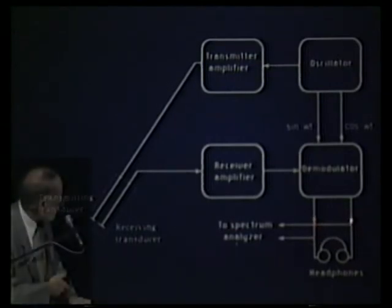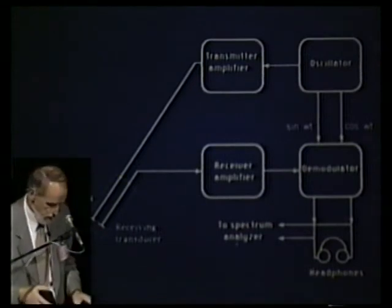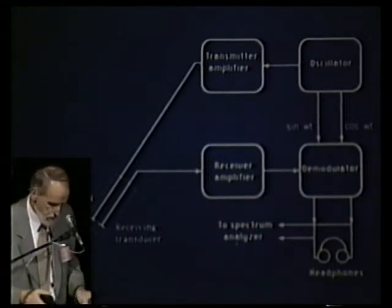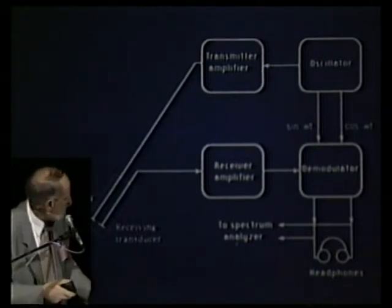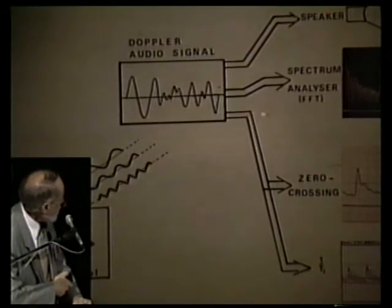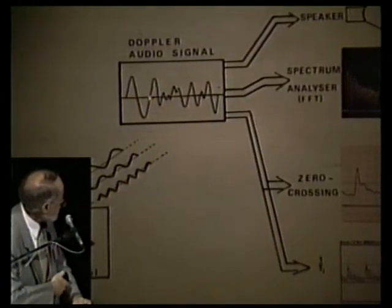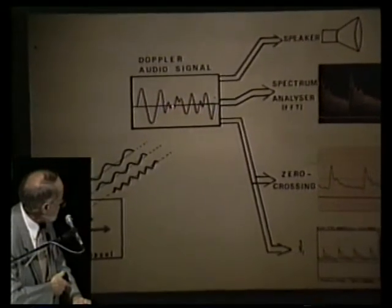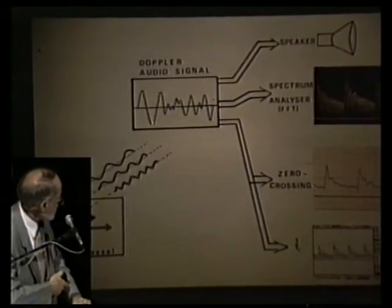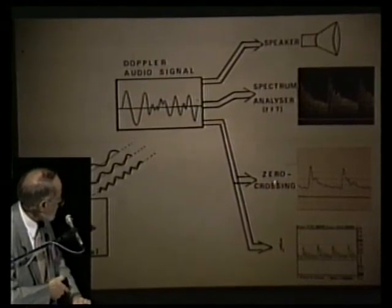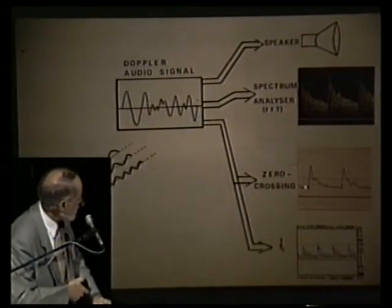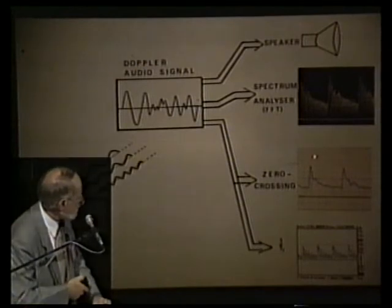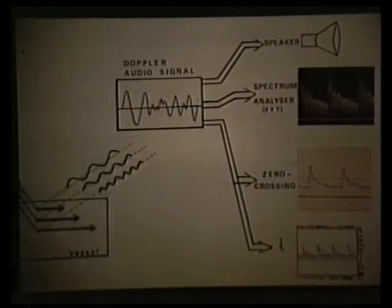In the demodulator, the velocity signal corresponding to the positive or negative Doppler shift can be sent to a spectrum analyzer, a loudspeaker, or sometimes a zero crossing detector. A zero crossing detector measures the time between each zero value of the Doppler signal, providing information related to the mean frequency. This velocity curve can then be registered on a strip chart recorder.